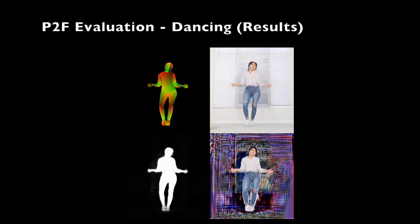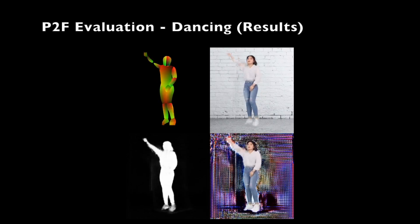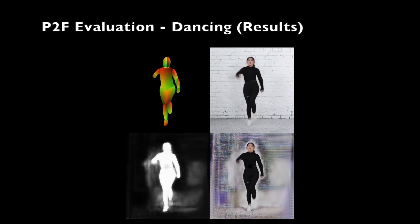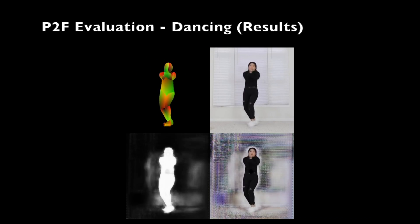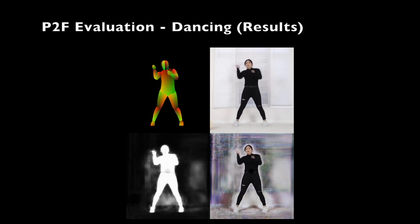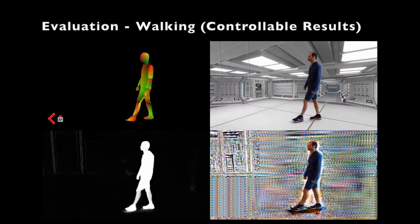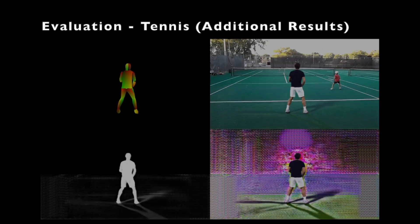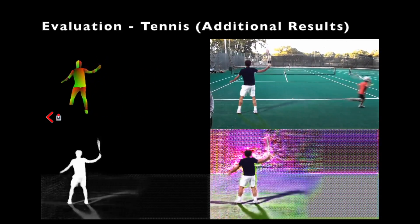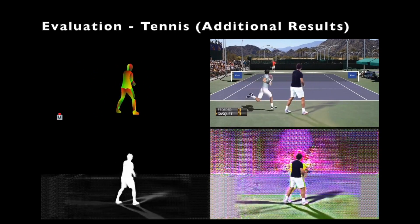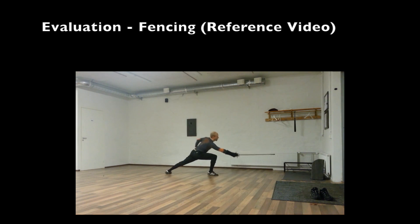Let's see a few additional examples. In the dance sequence, we demonstrate our ability to mix and match between characters and backgrounds, which is not possible in the previous work. In the walking sequence, the character is controlled and embedded in various backgrounds. As seen in the tennis sequence, our control over the character determines the pose, which in turn determines the blending mask and the generated raw frame. The raw frame is then blended with the dynamic background to create the final frame. This is the reference video for the fencing sequence. Here too, we demonstrate our ability to control the motion in the scene.